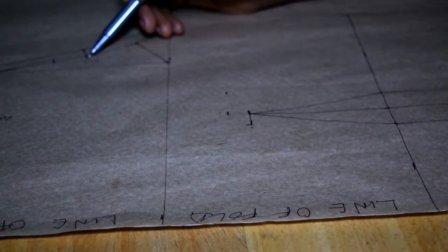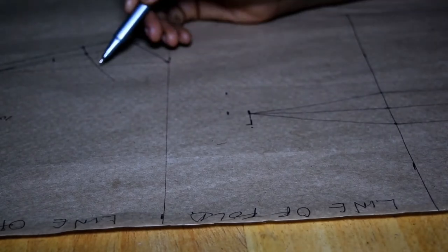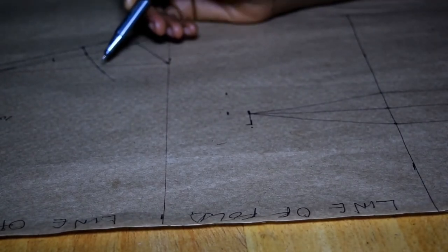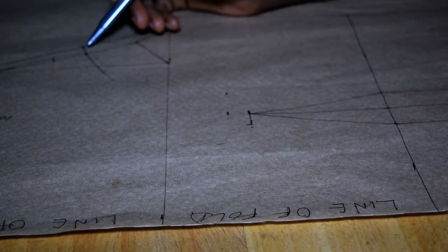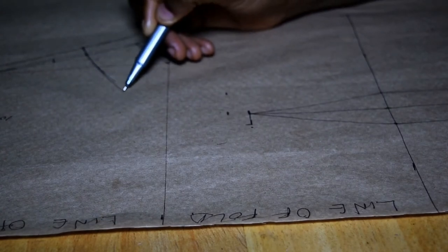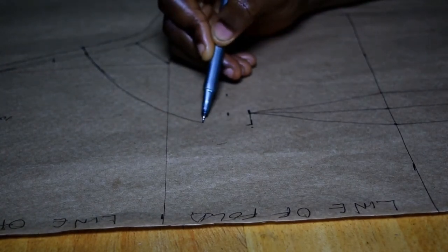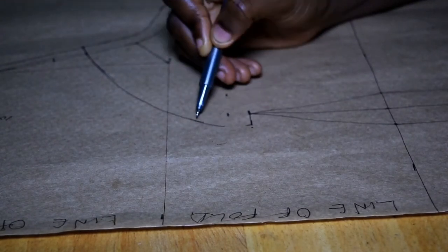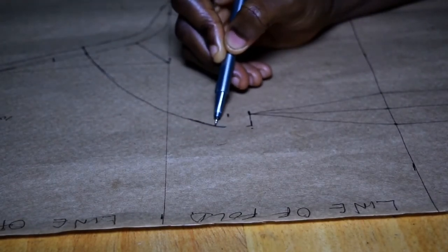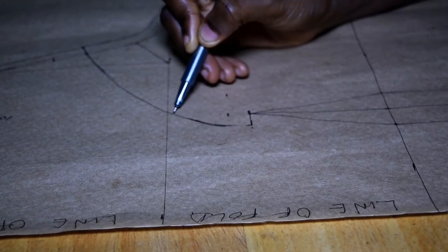And then I'm going to connect my curve from where I'm going to connect my armscye to that extension of my central dart, from where I marked out the half inch at the armscye to the half inch at my bust point.